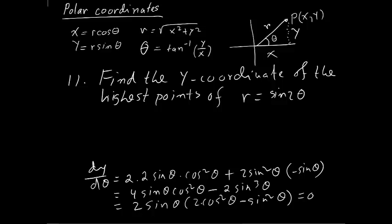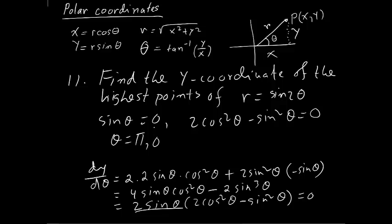You get sine theta equal to 0, and 2 cosine squared theta minus sine squared theta. This is solution of trig equations from pre-calculus. When sine theta is 0, theta is pi or 0. Sine is 0 at 0 and pi.